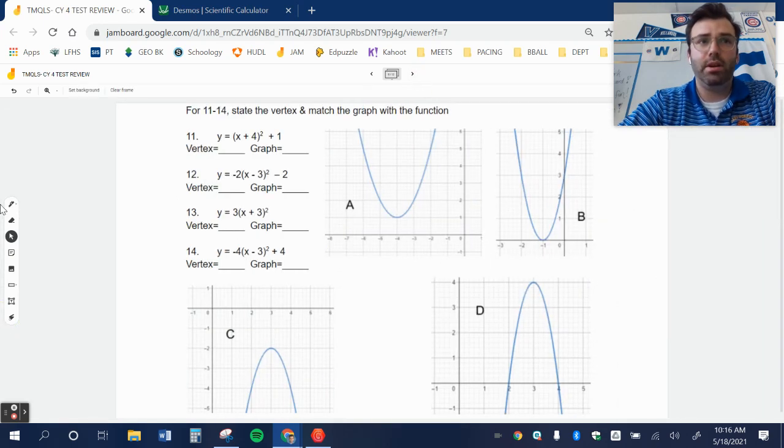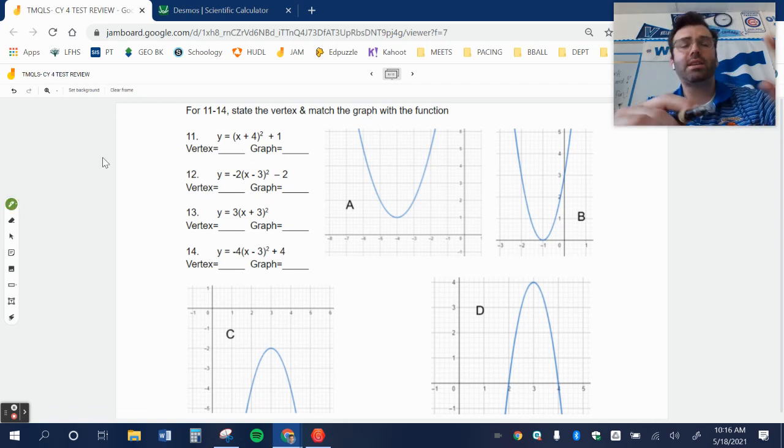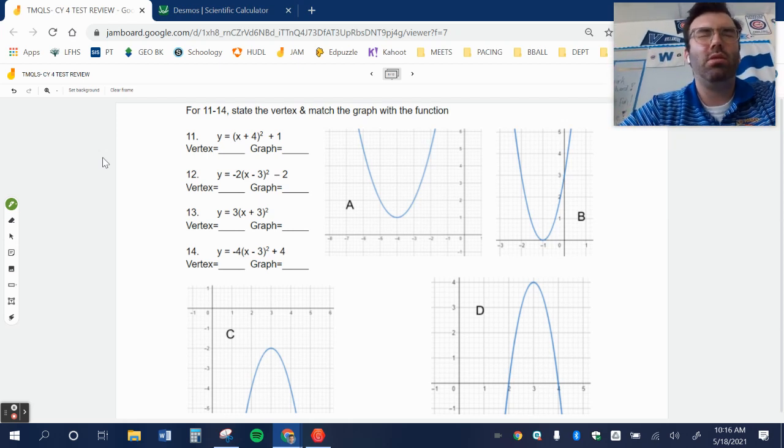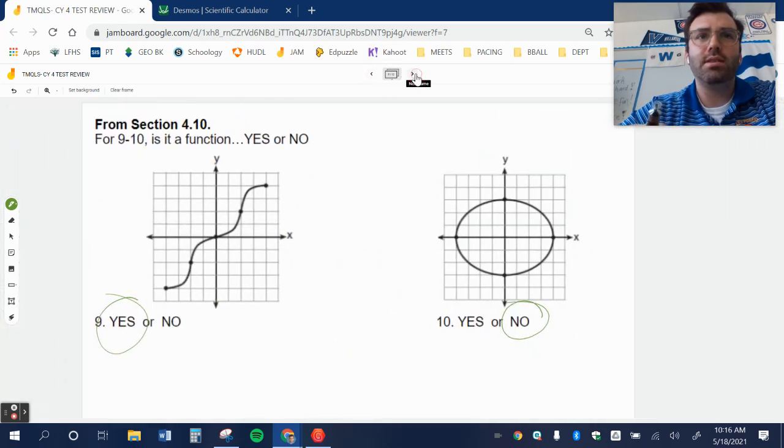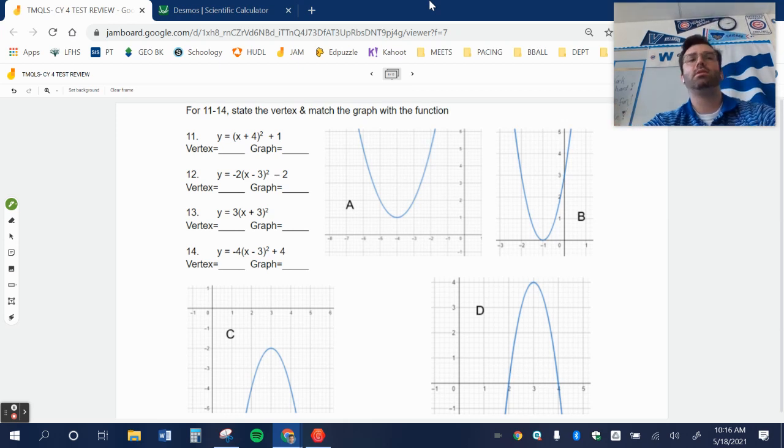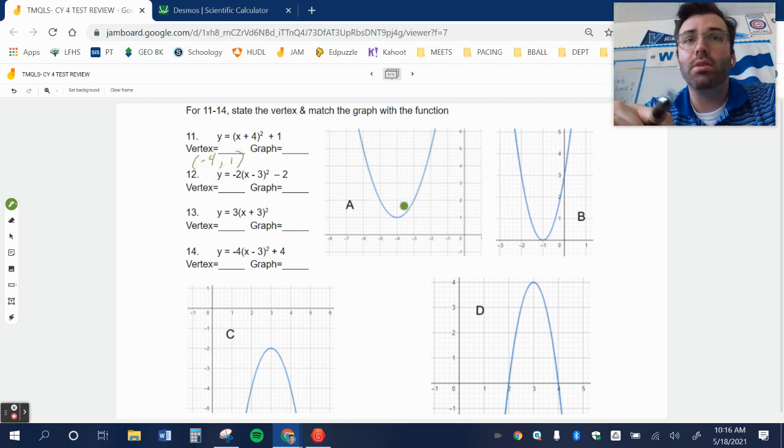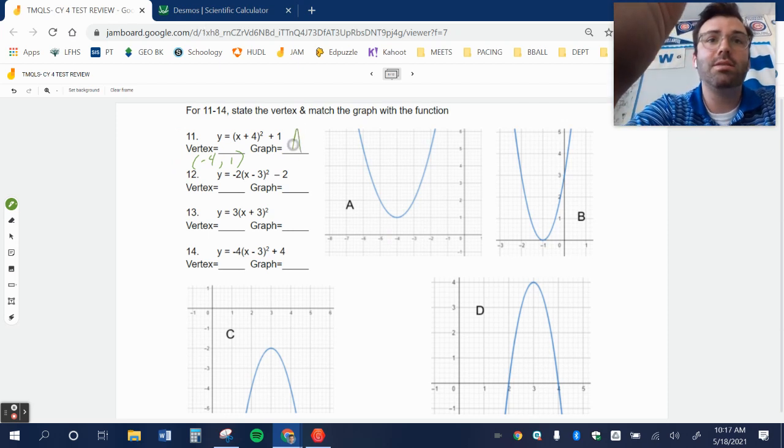Let's keep going. State the vertex and match your graph with each function. So y equals (x+4) squared plus 1. This is from section 4.10 or 4.11. So for (x+4) squared plus 1, remember on the inside of the parentheses I do the opposite. So the vertex is negative 4, and the outside it stays the same, comma 1. So I'm going to look for negative 4 comma 1. Oh look at that, it's the first one.